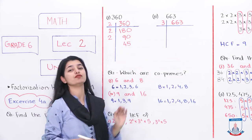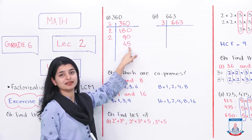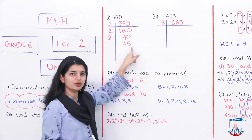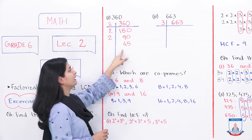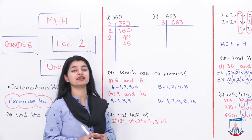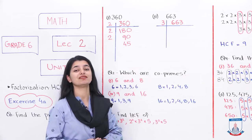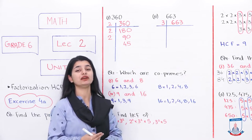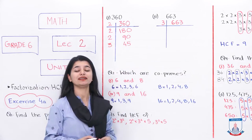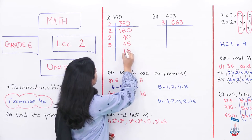Now you have to factorize 45 further. 45 cannot be divided by 2, so we try 3. To check divisibility by 3, you add the digits: 4 plus 5 is 9, and 9 is divisible by 3. That means 45 is also divisible by 3. Three 15s are 45.